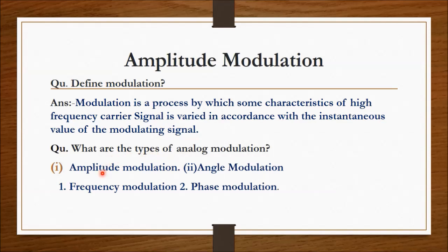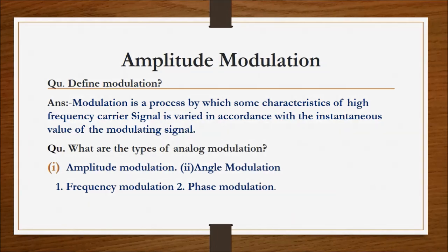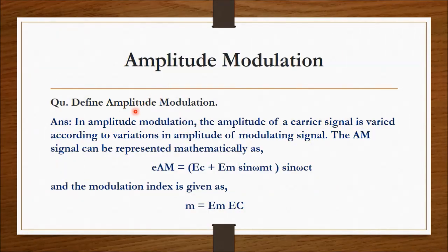The types of analog modulation are amplitude modulation, angle modulation, frequency modulation, and phase modulation. Define amplitude modulation: in amplitude modulation, the amplitude of the carrier signal is varied in accordance with the variation in amplitude of the modulating signal.